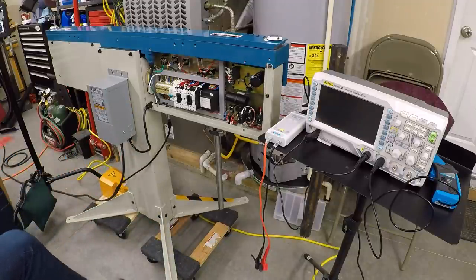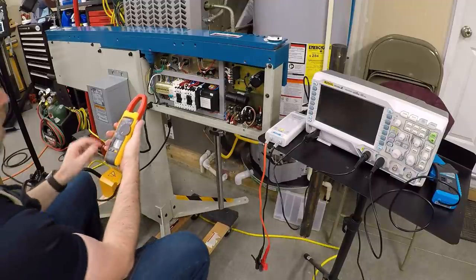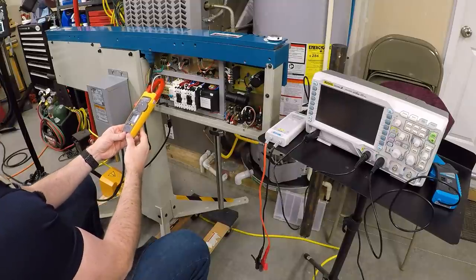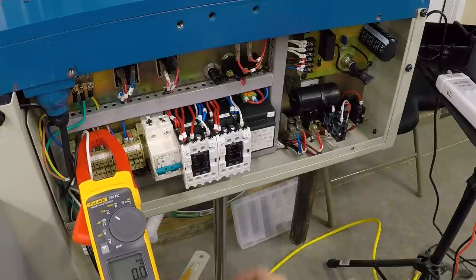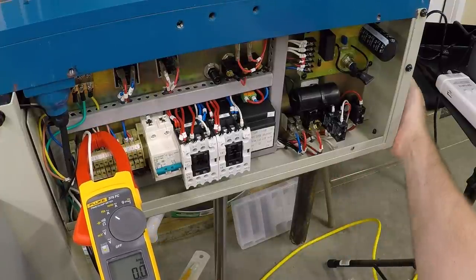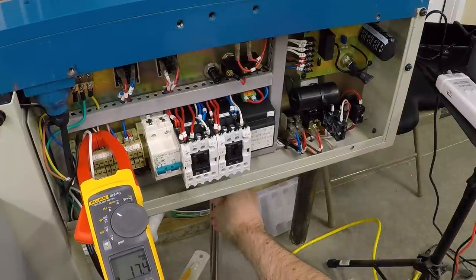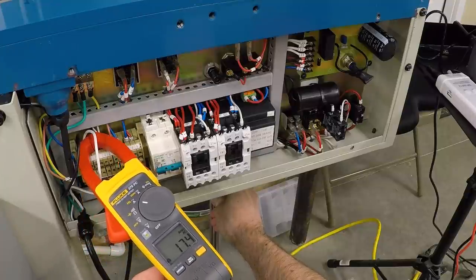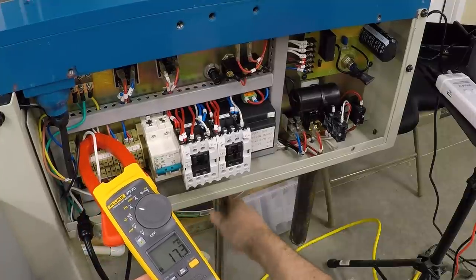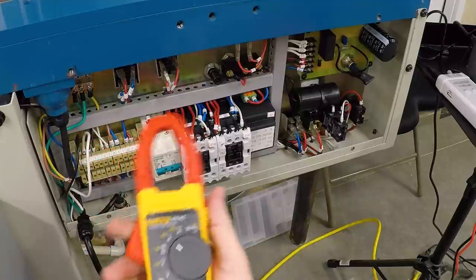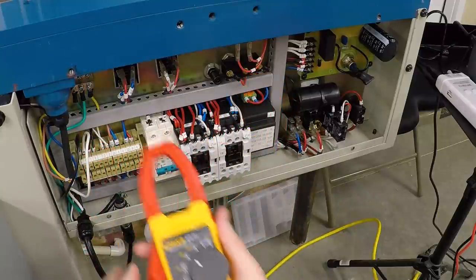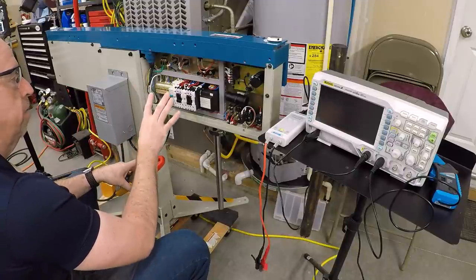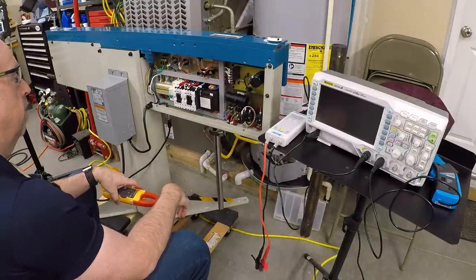Let's measure the current and see what we're actually getting. Set this to amps AC and we'll put this on the input line. And there it is, 17.4 amps. Now this is an RMS meter, so this is an RMS current reading, not an average current reading. And that turns out to be important because the power factor on this device is pretty bad.